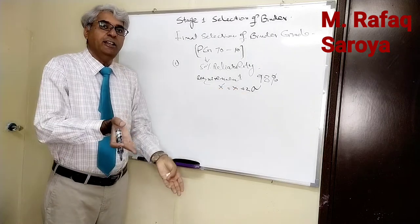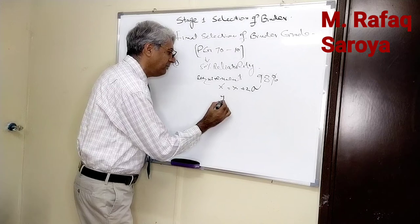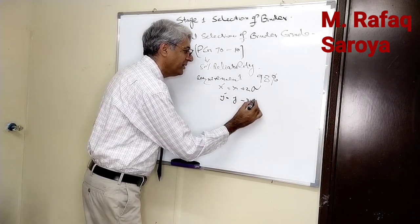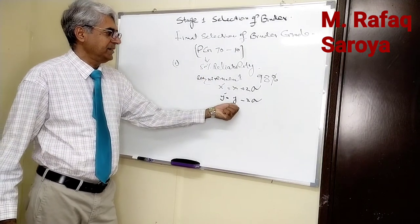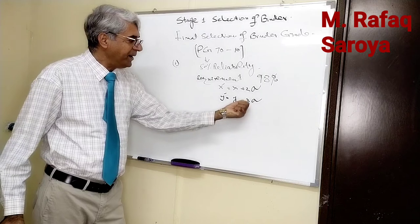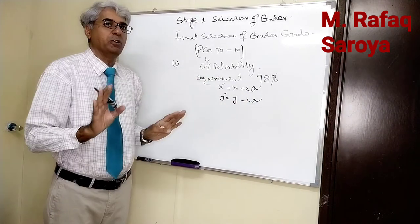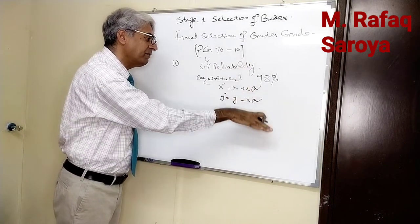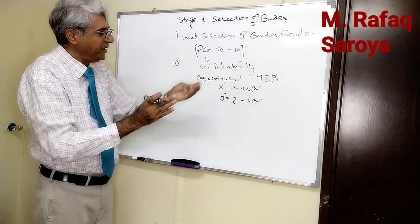Similarly for low temperature, Y dash is equal to Y minus 2 sigma. If it is minus 10, this temperature will be further reducing down. Here the temperature will be going up, here the temperature will be further reducing down.